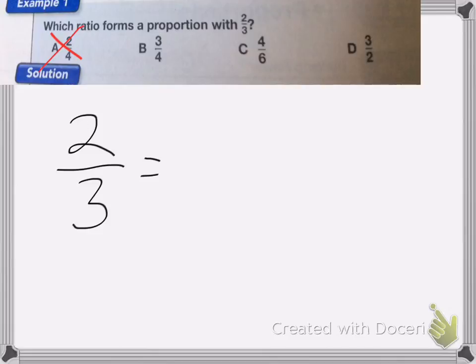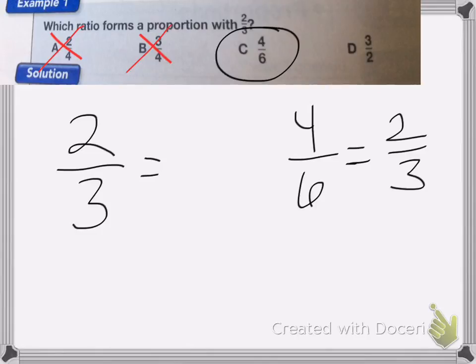Let's look at B, three-fourths. Well, I can't reduce three-fourths any smaller, so it can't be that one. And let's look at four-sixths. Four-sixths we can reduce down to two-thirds. So my answer is C. Four-sixths is the same as two-thirds.